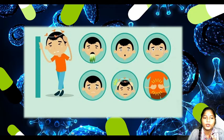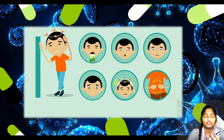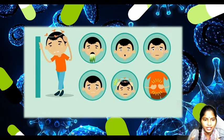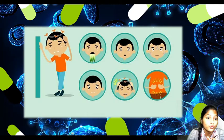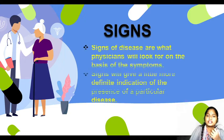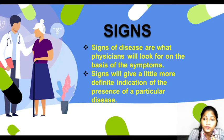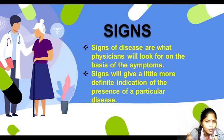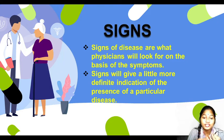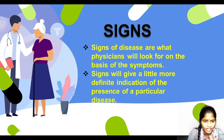More symptoms include nausea, dizziness, sweating, headache, and stomach problems. These can be caused by overeating, indigestion, or an injury. Since some symptoms are common to many conditions, we look further at what diseases are possible. Signs of disease are what physicians look for on the basis of symptoms. After noting symptoms, a doctor examines for additional signs to get a more definite indication of the presence of a particular disease, and may prescribe some tests.